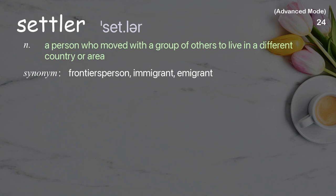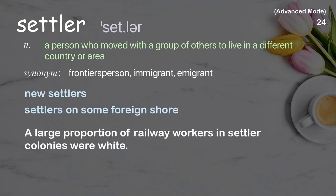Settler: a person who moved with a group of others to live in a different country or area. Examples: new settlers, settlers on some foreign shore. A large proportion of railway workers in settler colonies were white.